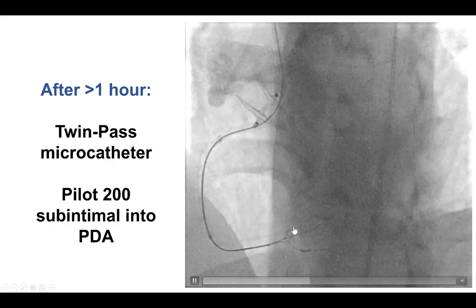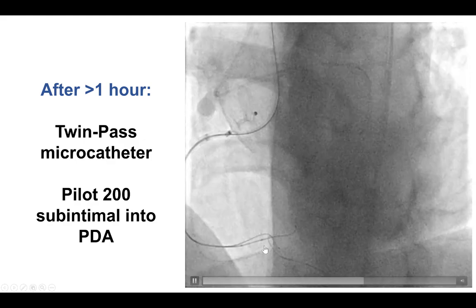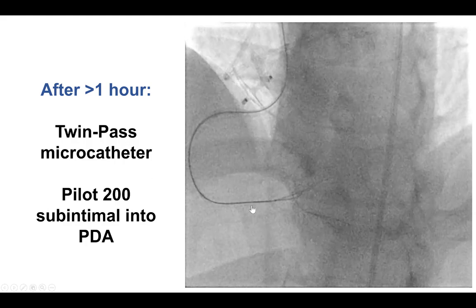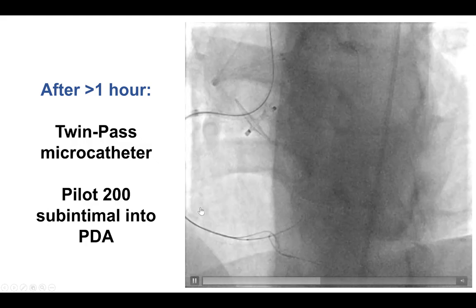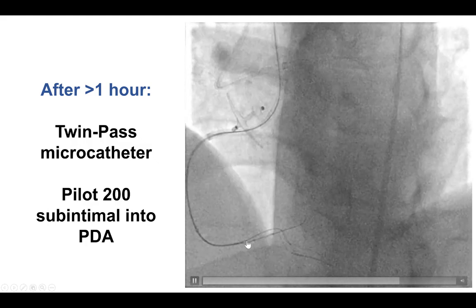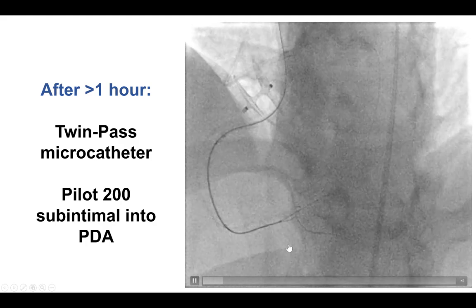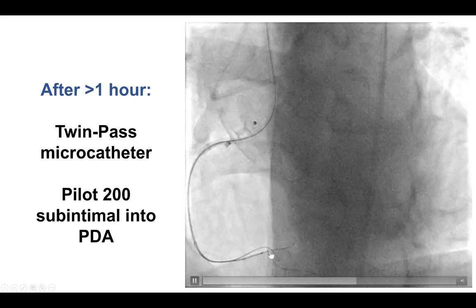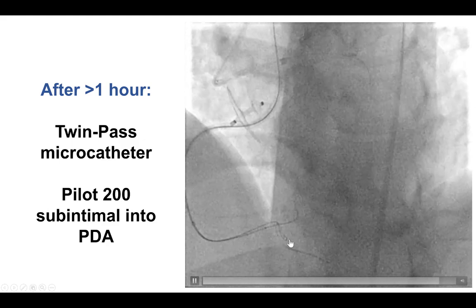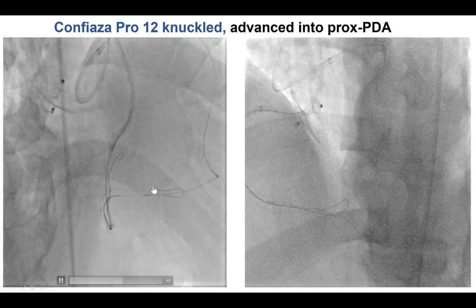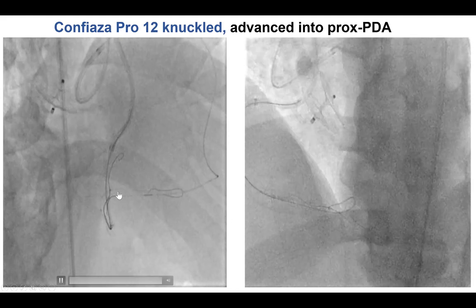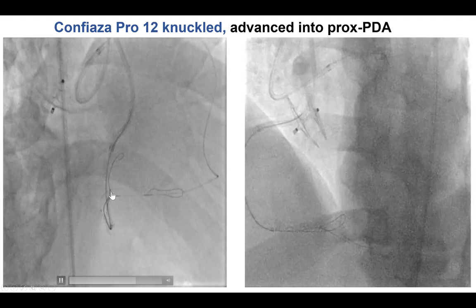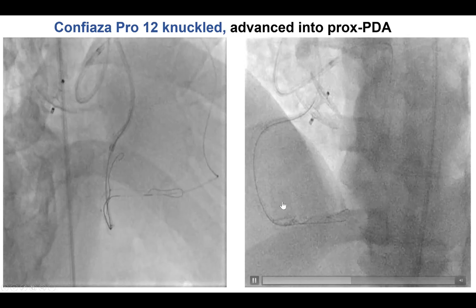We spent quite a long period of time. We tried both going retrograde into the distal RCA and antegrade, and after more than an hour of attempts, eventually we advanced a dual lumen microcatheter — a Twin Pass — through which a Pilot 200 finally went subintimally into the course of the right posterior descending artery. There appeared to be some significant tortuosity at that point. After doing that, the modified connection between the distal RCA and the PDA allowed us to advance a PRO-12 to the distal right coronary artery.